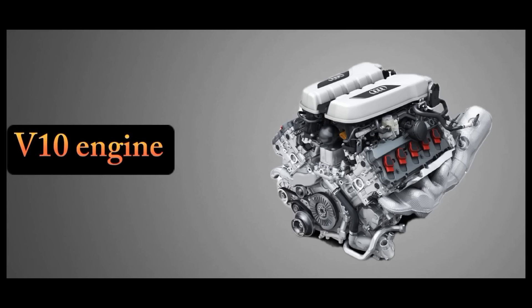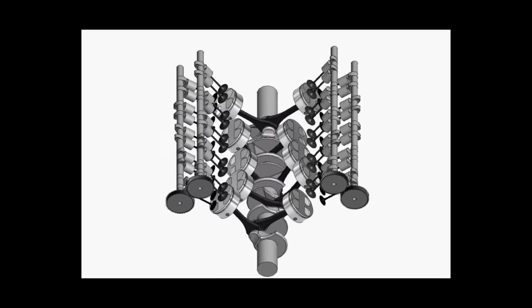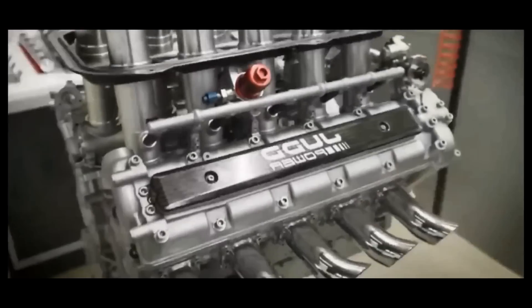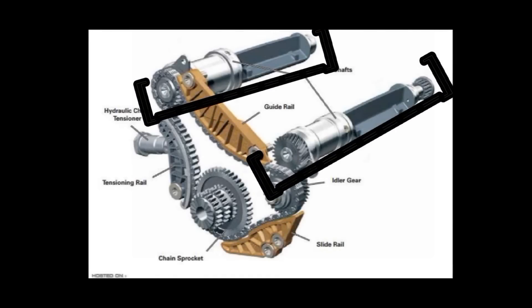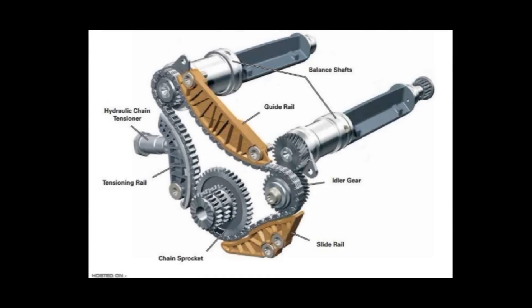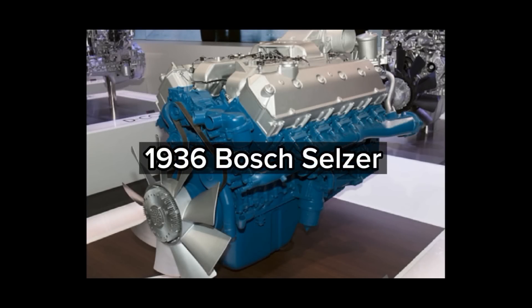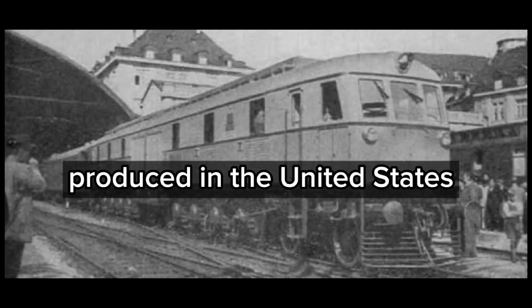The V10 engine is a 10-cylinder piston engine and is much less common than the V8 and V12 engines. The V10 configuration is not perfectly balanced, as an unbalanced swing pair results from each cylinder bank operating as a straight-five engine. Therefore, balance shafts are sometimes used to reduce vibration. One of the first known V10 engines was used in the 1936 Busch-Sulzer prototype locomotive, of which three were produced in the United States.